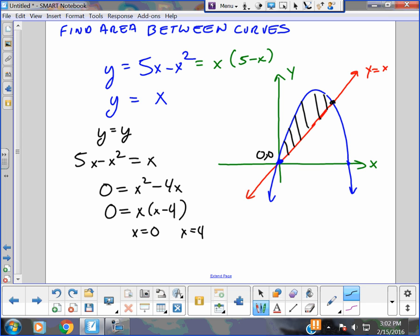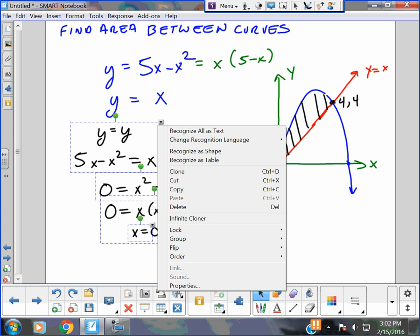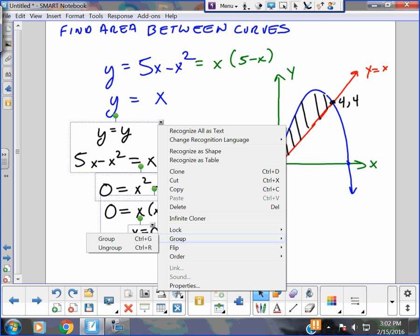So 0, 0 is the point of intersection. And if I use 4 with y equals x, 4, 4 is the other point of intersection. I found those awfully quick. This is pre-calculus work, finding points of intersection. But now let's do some calculus with it. We drew our curves. We did our pre-calc work over here.